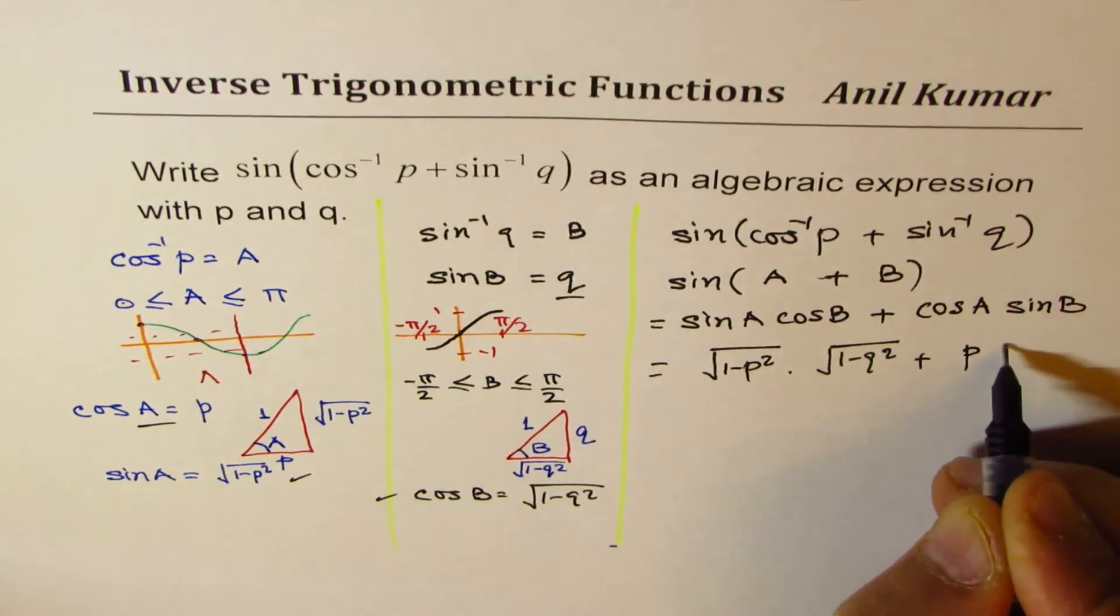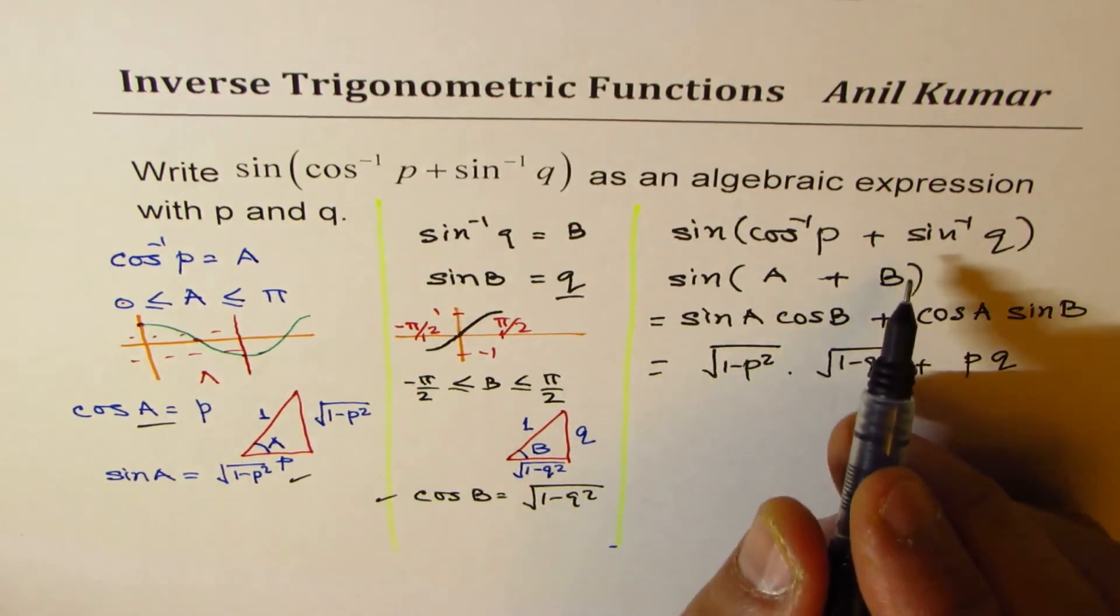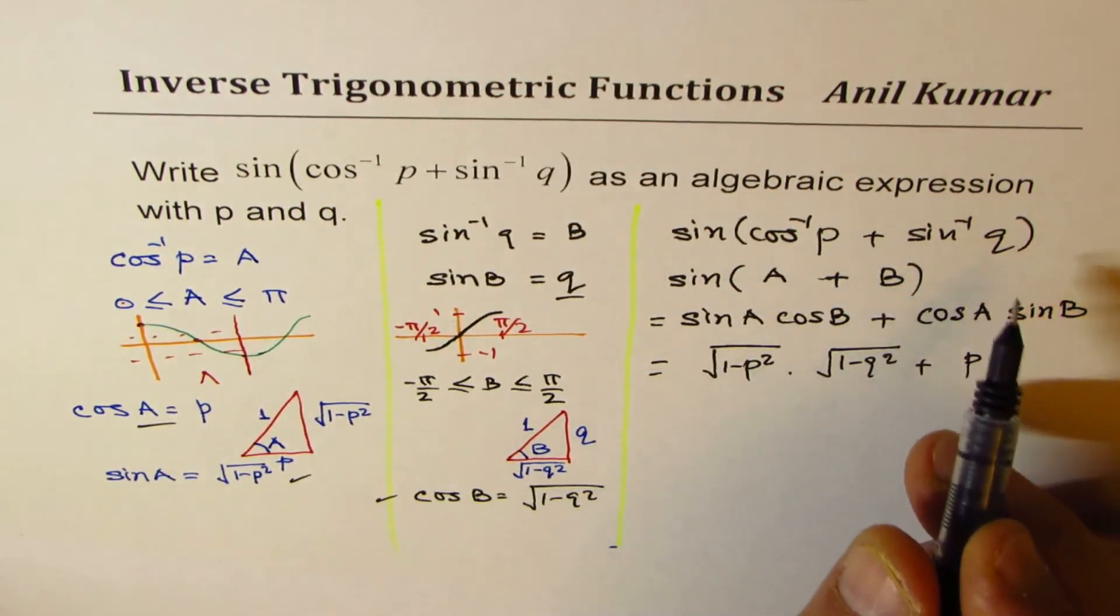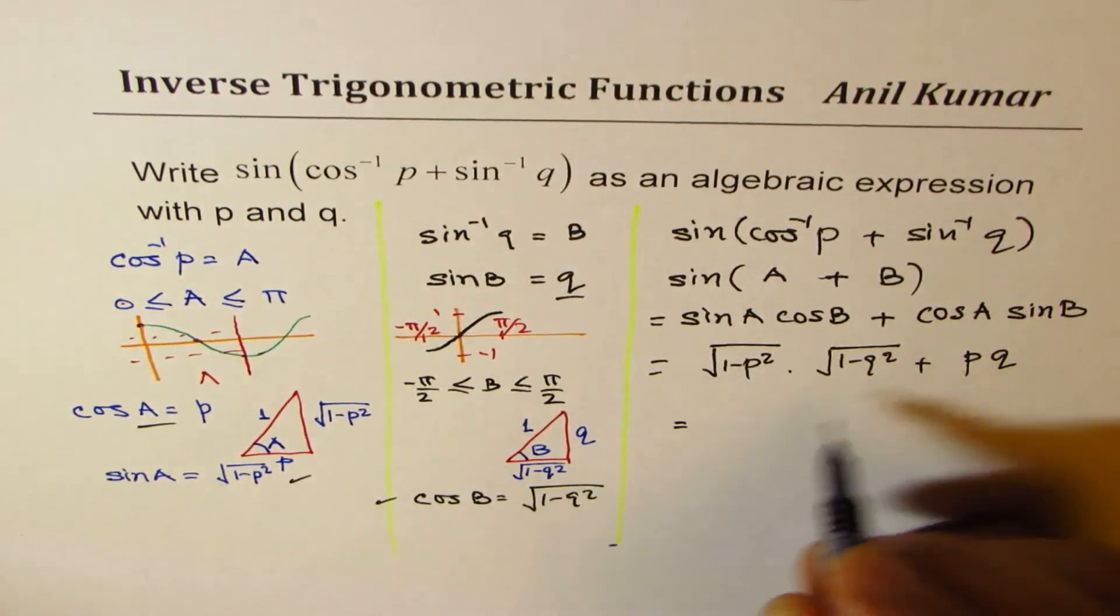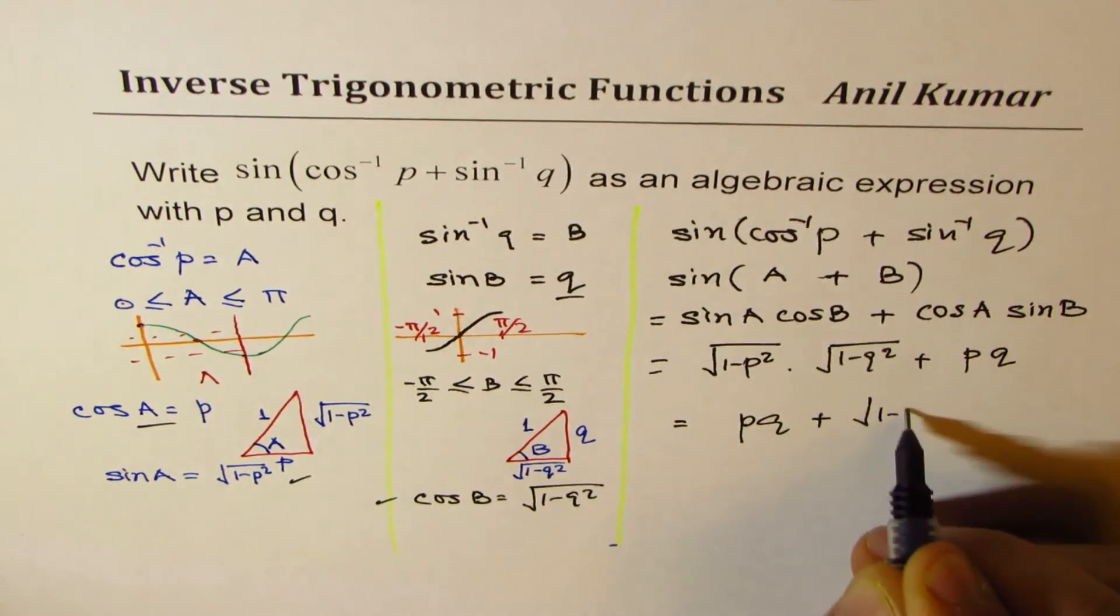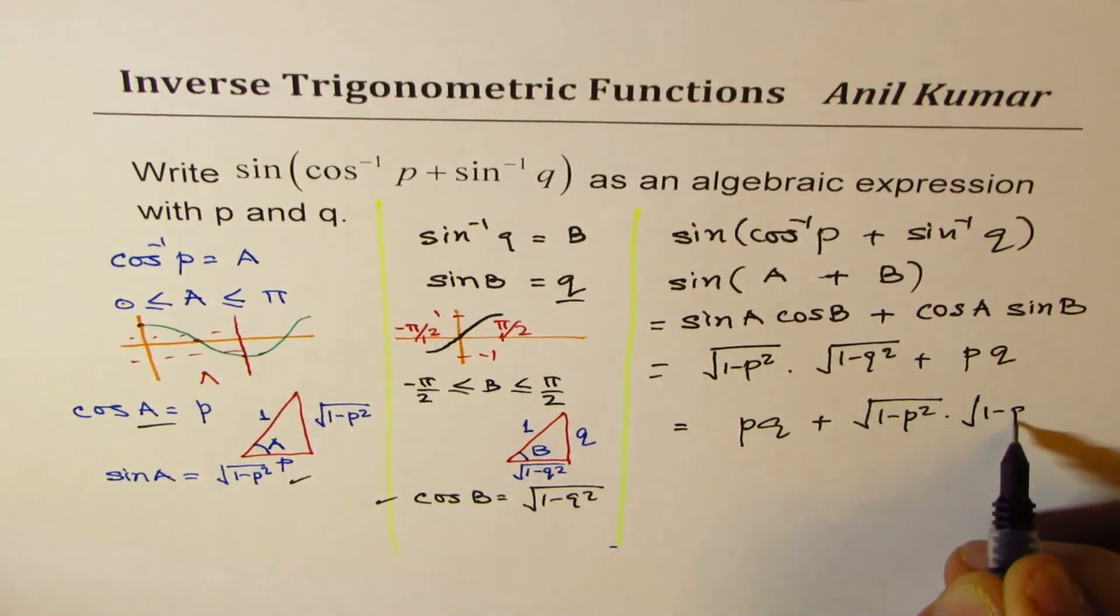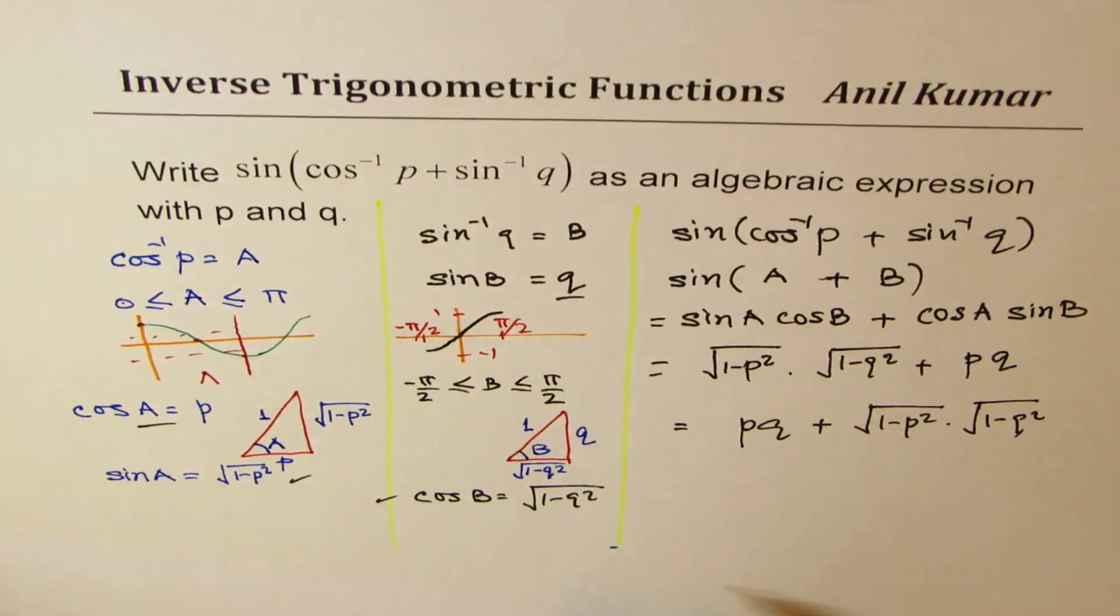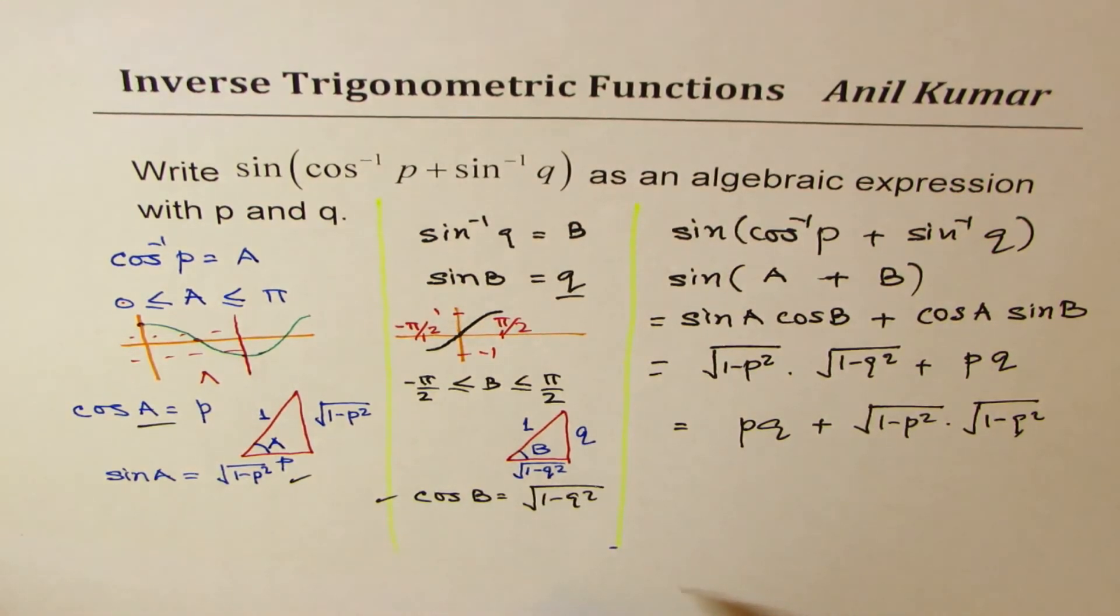So we can write this as pq. And therefore, the value of sin(cos⁻¹p + sin⁻¹q) can be written like this. So this is a general solution. You write this in the form pq plus √(1 - p²) times √(1 - q²). So that becomes the general formula for writing the exact value.